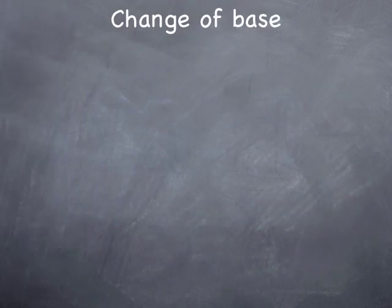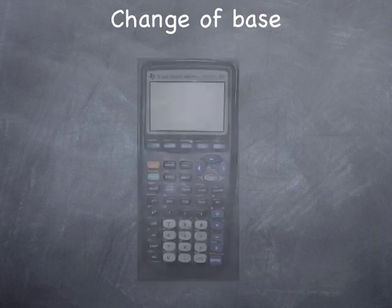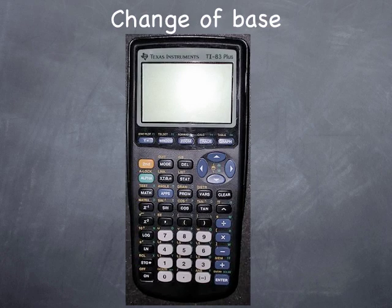Turning to the question of how these logarithms are related to each other, one practical question you may ask is: how do I calculate the log of base 3 or 7? If you look at your calculator, you'll see that you have two keys for logarithms — one denoted ln, the natural log, and another denoted log, which by convention is the log of base 10. So how do we calculate the log of another base, like base 3 or 7?